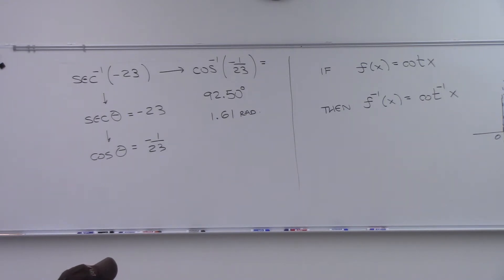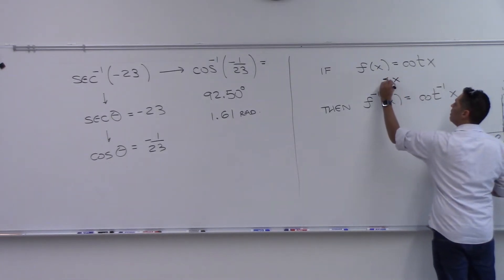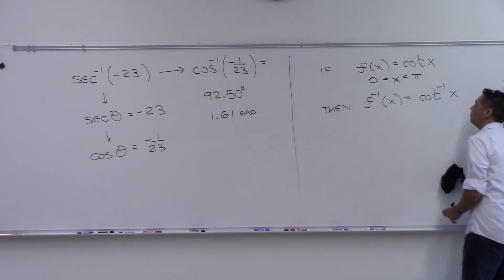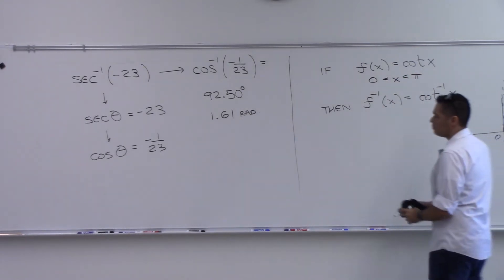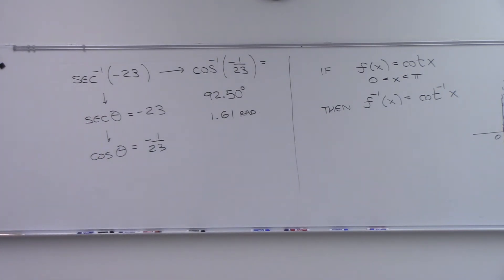Is that a one-to-one function between here and here? It passes both the vertical and horizontal line tests. So I don't need to do anything weird with the domain — I just stick with this restriction, keeping x between 0 and π, and everything should behave as expected.